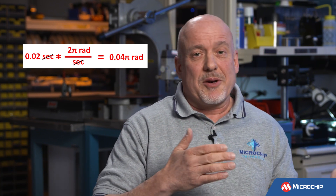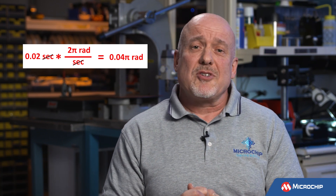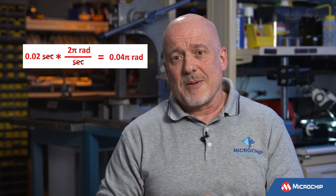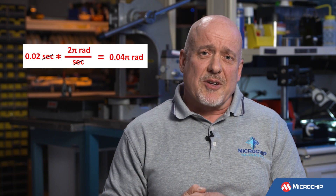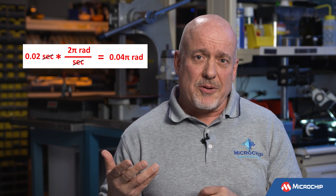Now, as engineers, we are typically comfortable referring to phase in radians, where there are 2 pi radians per period. This is a one hertz clock, so a period is one second. If we choose to express our 0.02 seconds of phase this way, it is 0.02 times 2 pi radians per second, which gives us 0.04 pi radians per second.